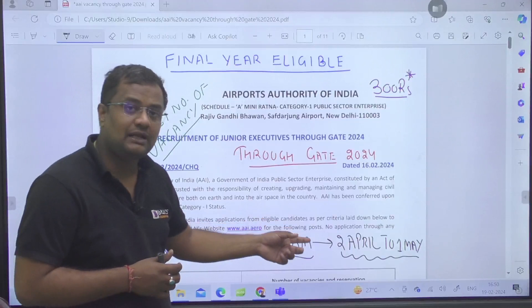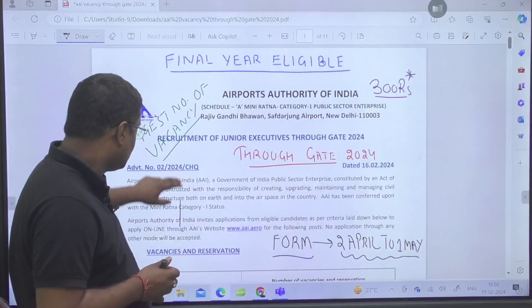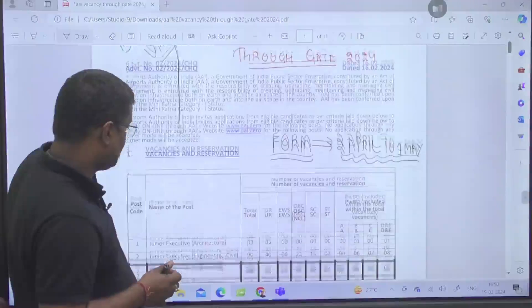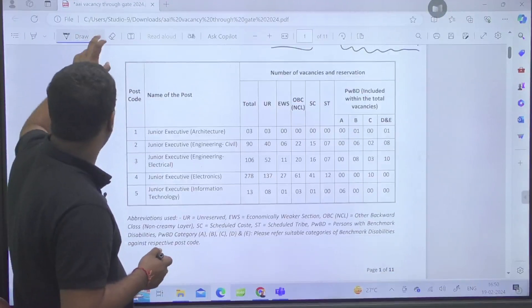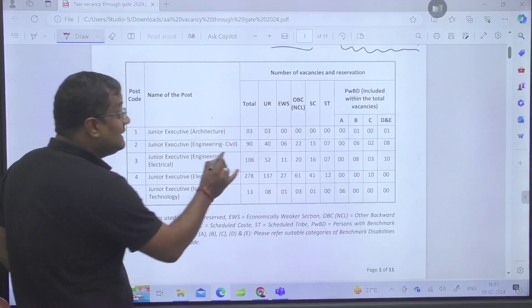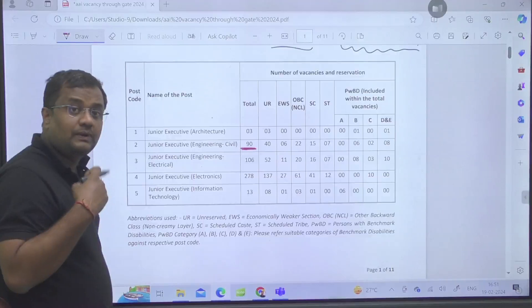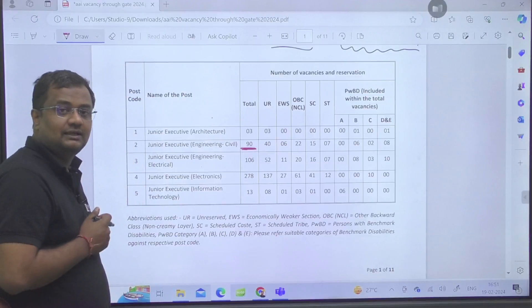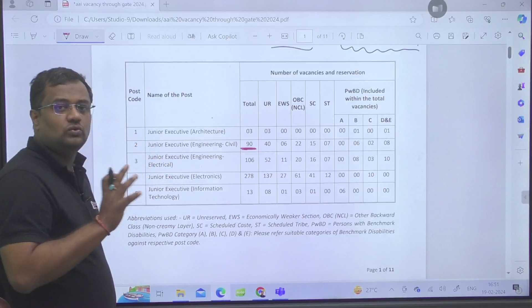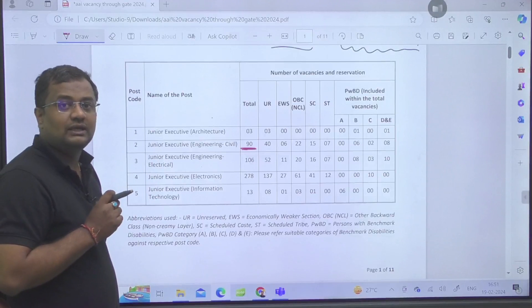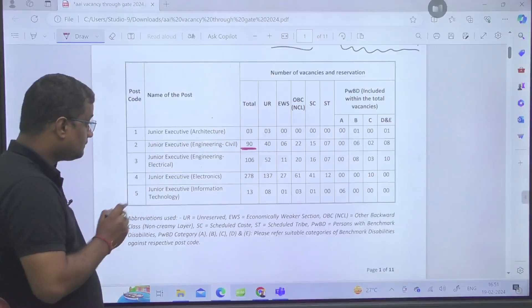From 2nd April to 1st of May you can fill this form. If we look at the number of vacancies, that's huge. For civil, 90 vacancies - my own brother is working in this post, he was selected many years before through GATE only and it is equivalent to the officers recruiting in IOCL and other PSUs.